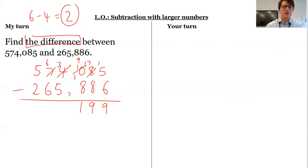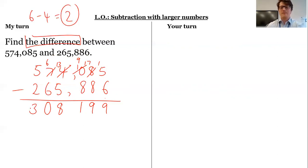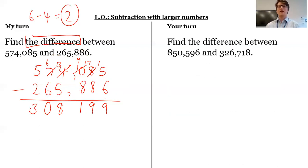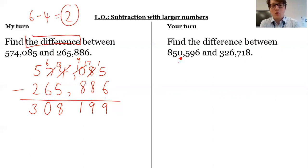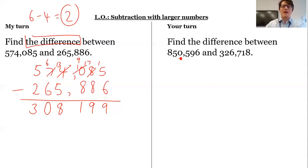3 subtract 5 I can't do, so I need to regroup. 13 subtract 5 is 8. 6 subtract 6 is 0 — I don't need to regroup there, that's fine. 5 subtract 2 is 3. Your turn — pause the video and think really carefully about what happens around the 0 when you need to regroup across a placeholder. Unpause when you're ready.